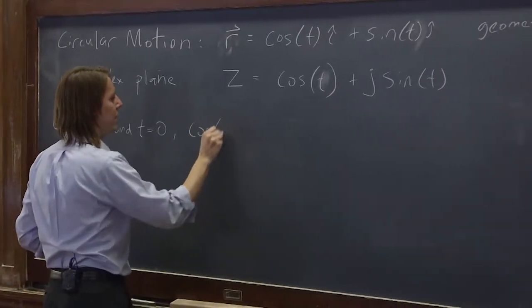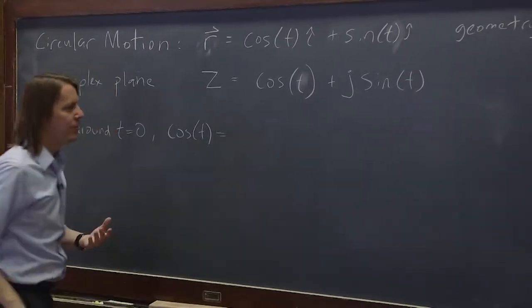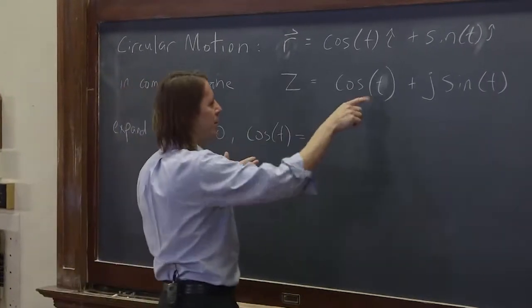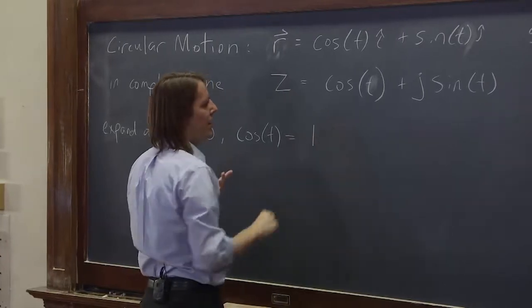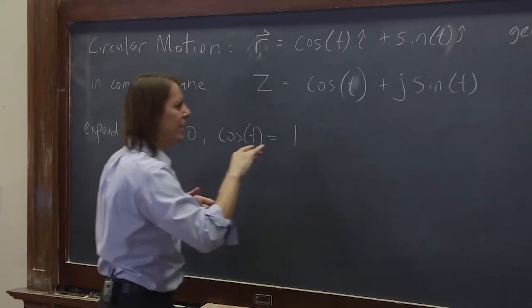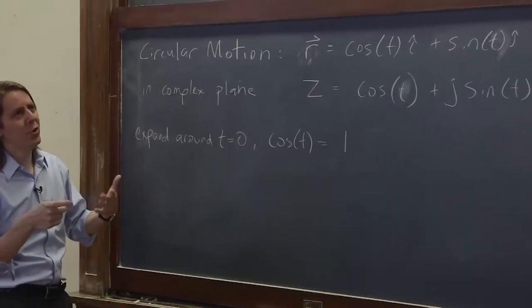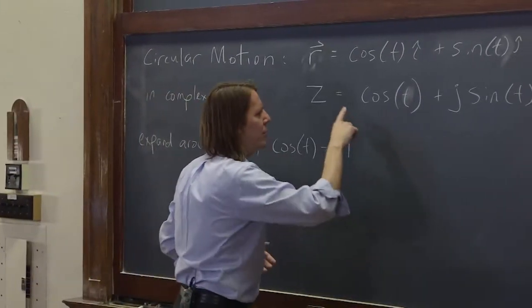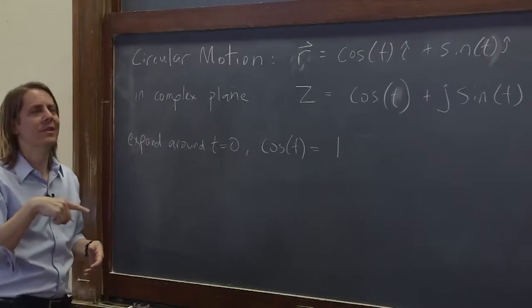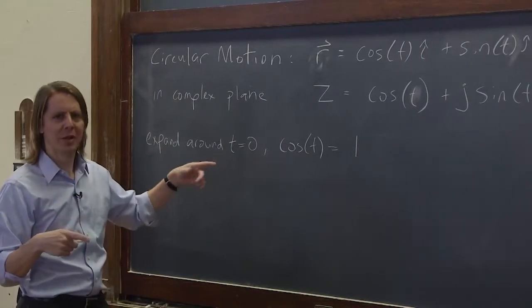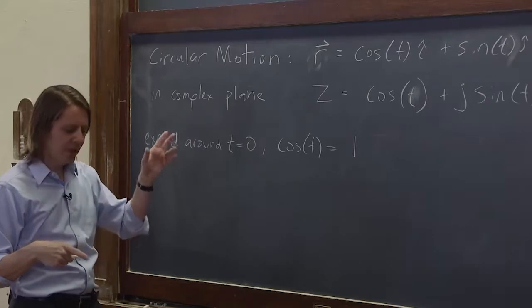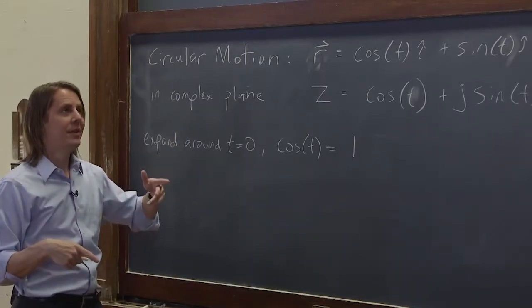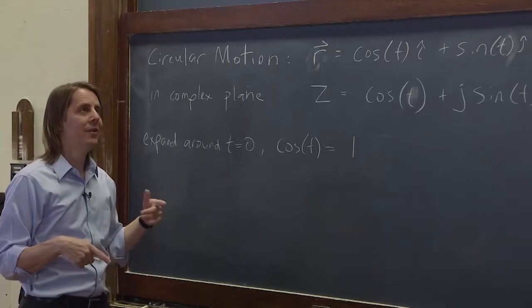So cosine t, if we apply our Taylor series, the zeroth term was the function itself evaluated at zero. That's one times t minus zero to the zero over one factorial, so the first term is just one. The second term would be the derivative of cosine is negative sine, but evaluated at zero is zero, so it has no second term. The third term would be another derivative, it would be back to negative cosine.